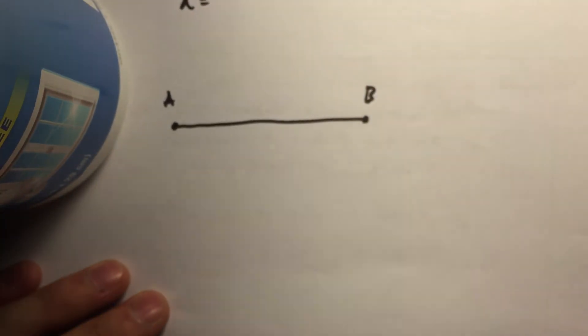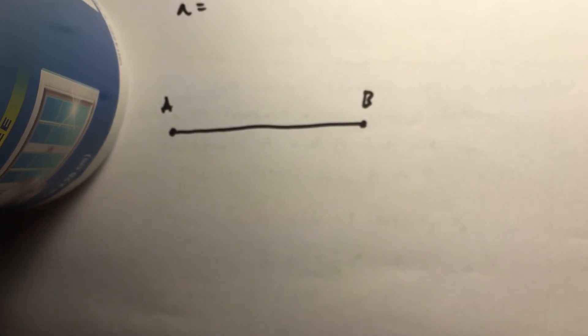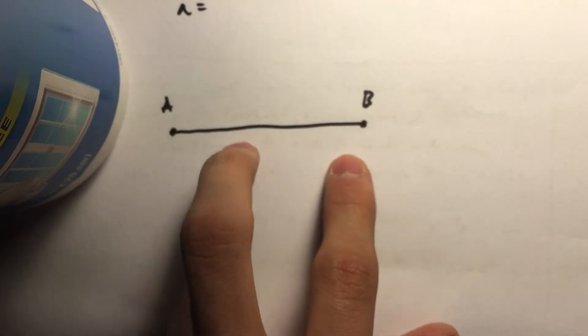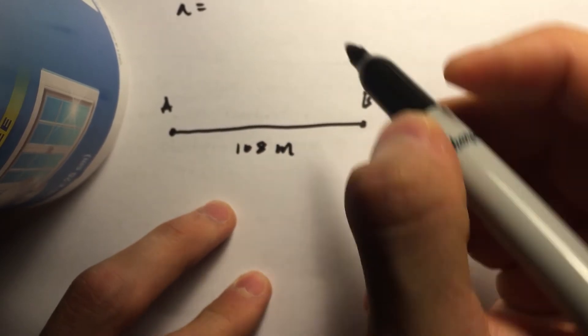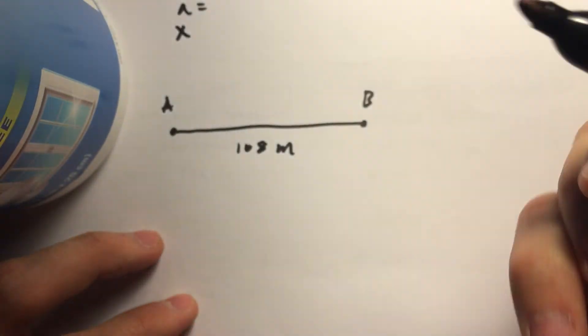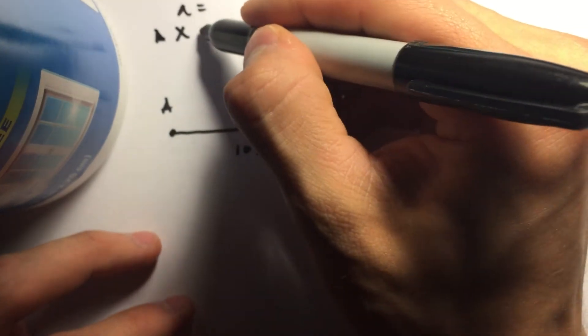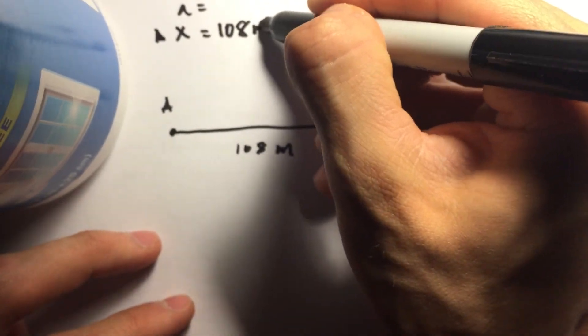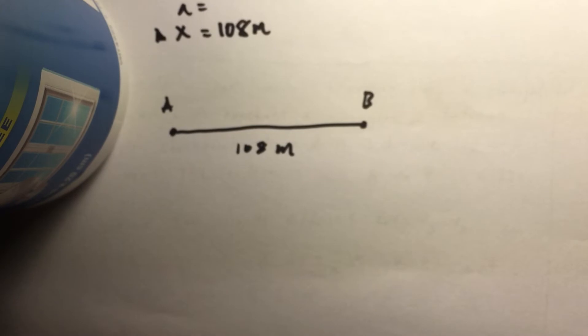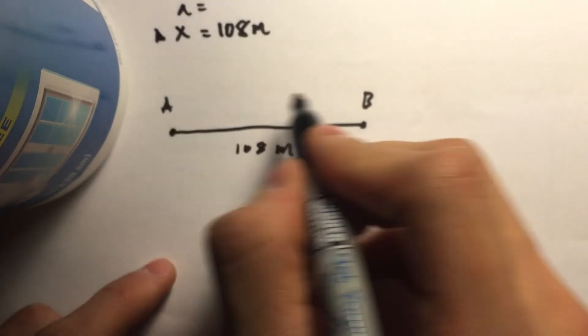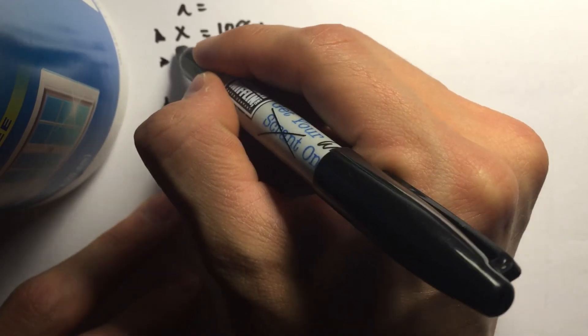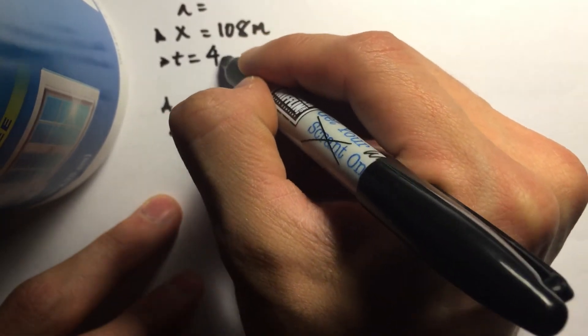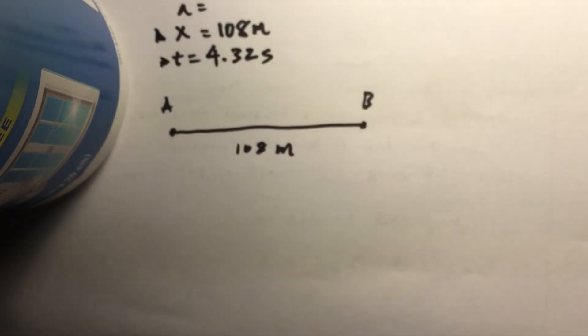It says these checkpoints are 108 meters apart. So we have a delta X of 108 meters. And then we have the car travels from A to B in 4.32 seconds, so we have a delta T of 4.32 seconds.